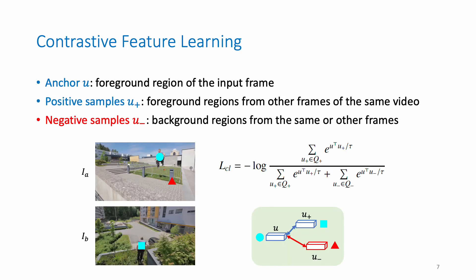In the contrastive feature learning, for each anchor as the foreground region of the input frame, we select positive samples as foreground regions from other frames of the same video, and negative samples as background regions from the same or other frames. We then apply the contrastive loss as shown below.